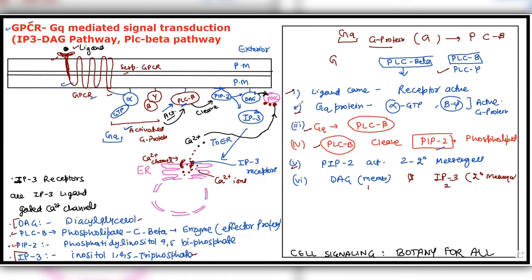So I described the chronology in reverse direction. To state it forward: ligand arrives → GPCR active → G protein active → phospholipase C-beta active → it cleaves PIP2 → upon cleavage, DAG and IP3 are activated. DAG remains membrane-bound.